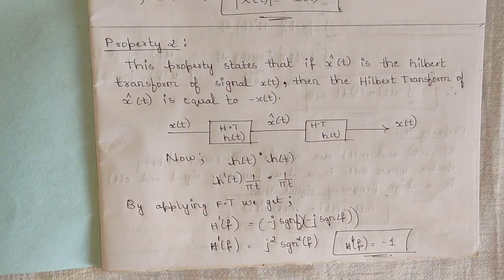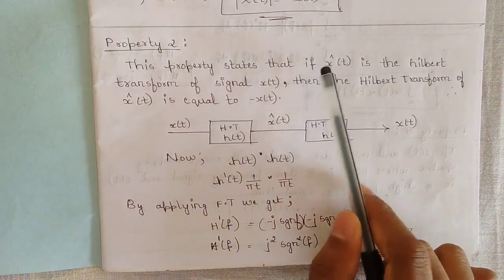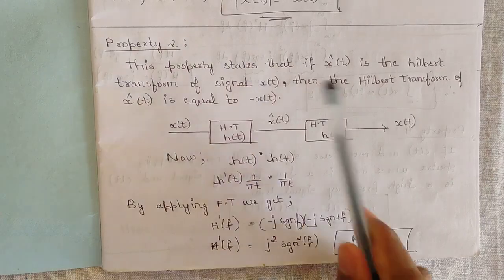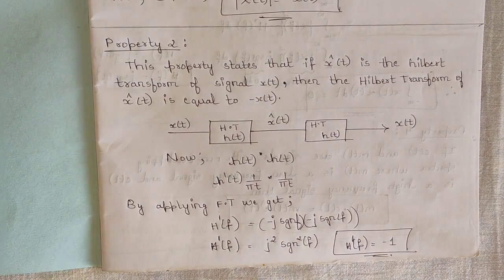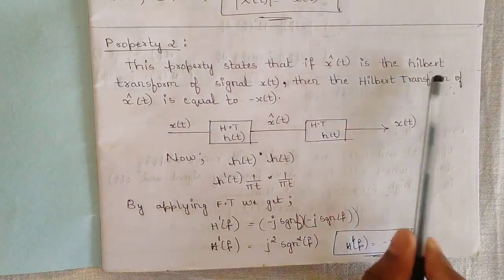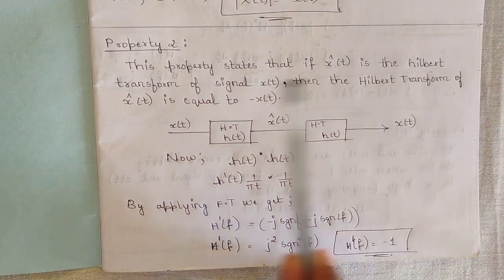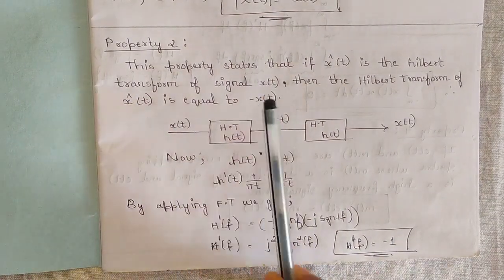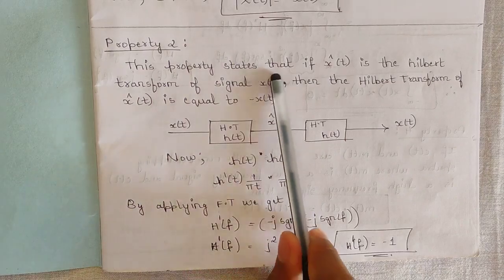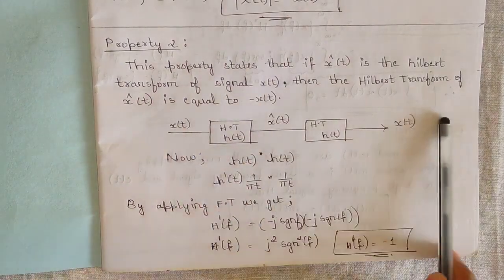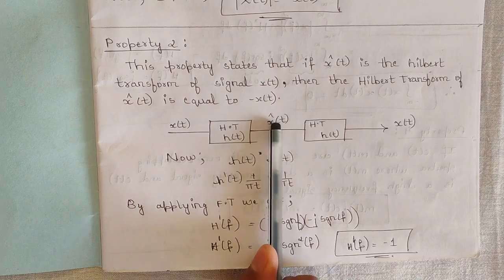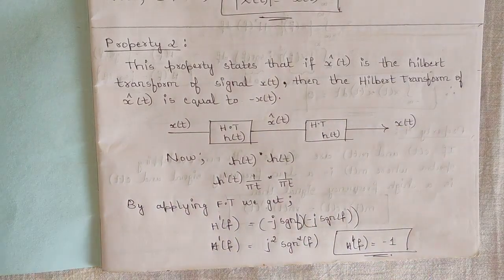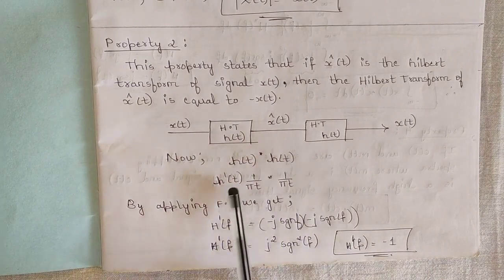The second property states that if x̂(t) is the Hilbert transform of x(t), then the Hilbert transform of x̂(t) is equal to −x(t). In other words, applying the Hilbert transform twice returns the original signal with a negative sign. So x(t) → HT → x̂(t) → HT → −x(t).